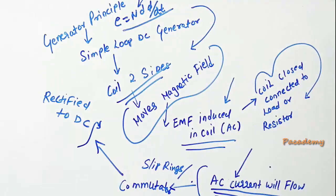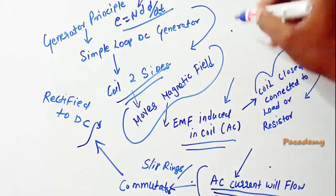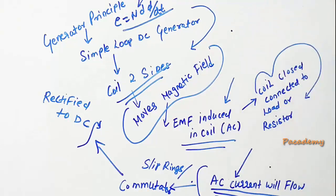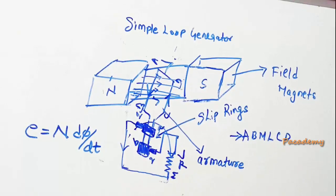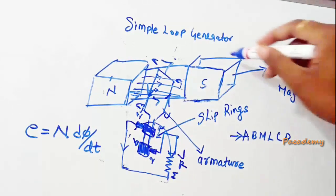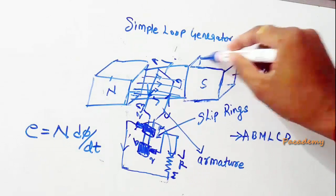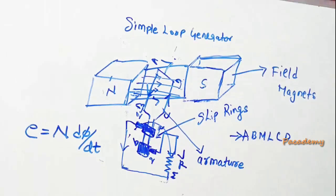In this way, a simple loop generator in which an AC EMF is induced is converted to DC, providing the basis for the working of a DC generator. The simple loop generator has two field magnets, or a single magnet with two poles, known as field magnets.